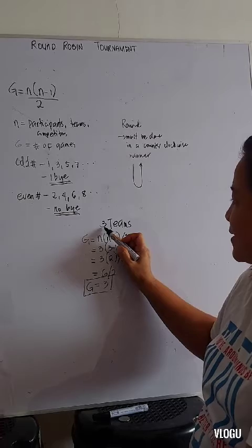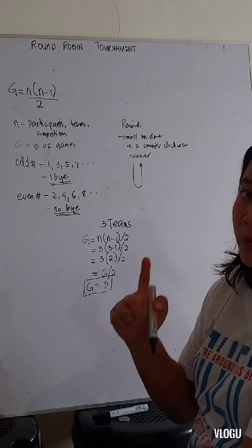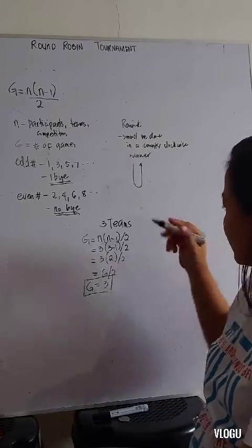As we can see here, 3 is odd. In other words, we have 1 buy.